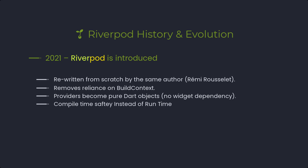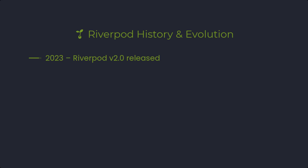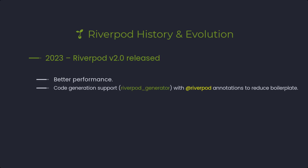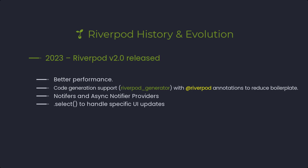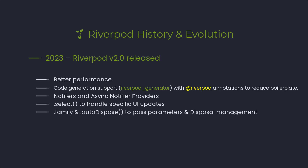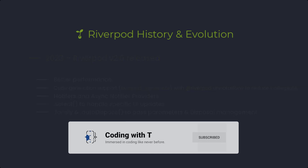He launched V1 in 2021 and introduced different types of providers: Provider, StateProvider, FutureProvider, StreamProvider, and to update the UI he introduced ConsumerWidget and WidgetRef. Then in V2 he improved a lot of things — he removed a lot of boilerplate and introduced a first-class annotation approach using the Riverpod Generator package. He introduced Notifiers and AsyncNotifiers to efficiently handle API calls, built-in support for .select to update only specific widgets, and introduced the family modifier and auto dispose. Version 2, released in 2023, was the biggest update Riverpod ever had.